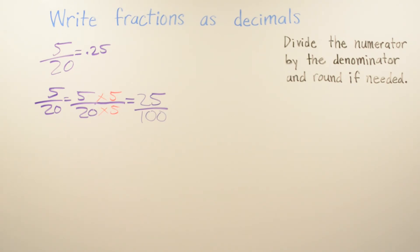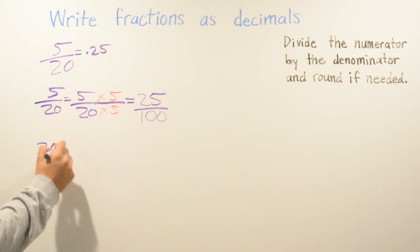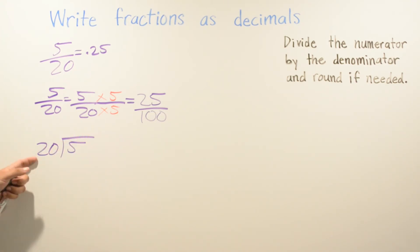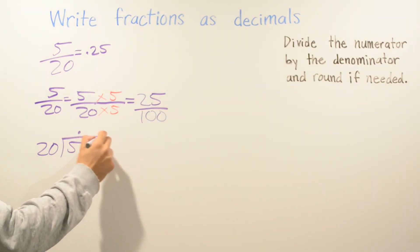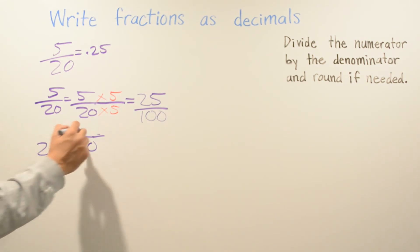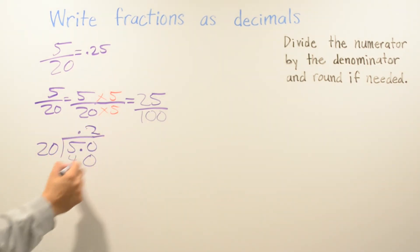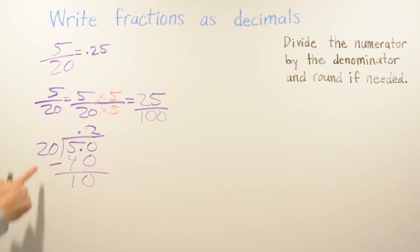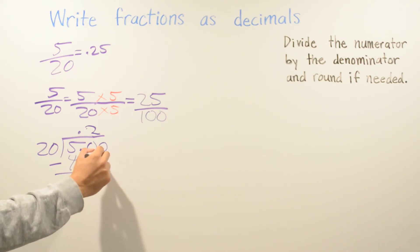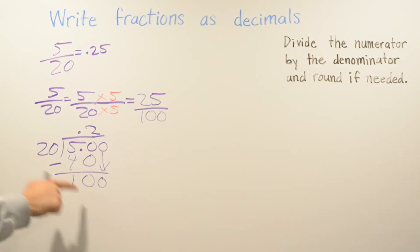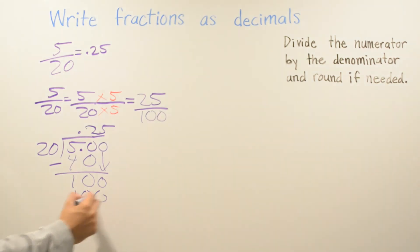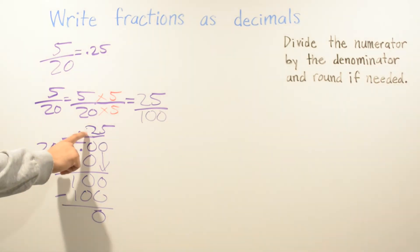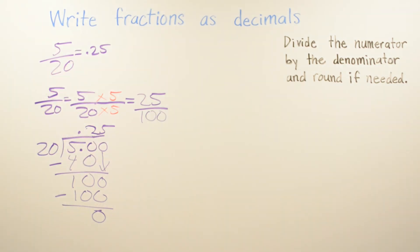Now for the division method: divide the numerator by the denominator and round if needed. We write twenty outside and five inside. Twenty cannot go into five, so we extend the division with a decimal and a zero. Twenty goes into fifty two times, giving forty with a remainder of ten. Adding another zero, twenty goes into one hundred five times — one hundred minus one hundred is zero. We get 0.25, the same answer either way.